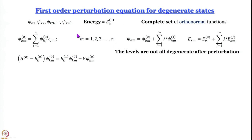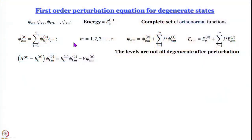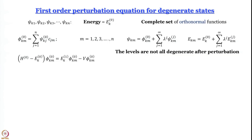The first-order perturbation equation for degenerate states is: (H⁰ − E_k⁰) φ_km⁰ = E_k^(1) φ_km⁰ − V φ_km⁰. I am skipping a few steps and strongly recommend that you work this out yourself — using the approach from the non-degenerate case — because if you have no questions after working through it yourself, you may not have fully understood it. You should be surprised, puzzled, and have questions.